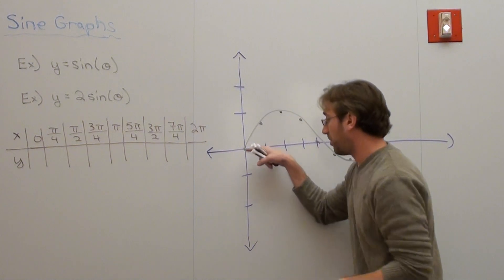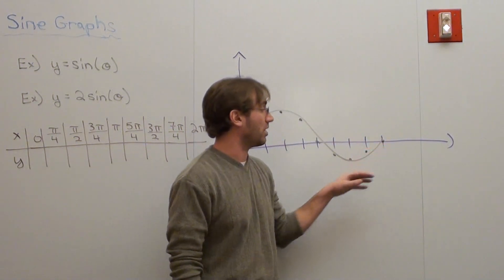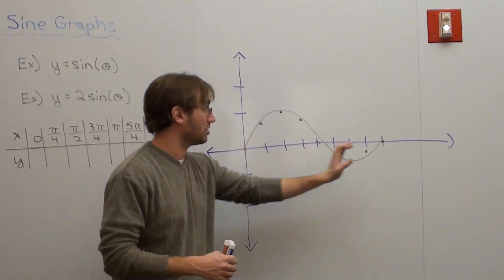Hello again. We're working with a sine graph. Remember a sine graph is continuous. It's going to continually go this way, continually go this way. But I just wanted to work from zero to two pi.